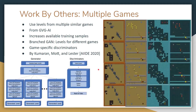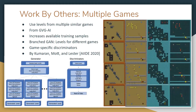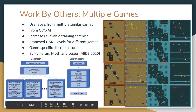Something else I heard about very recently while preparing this talk: work where someone took multiple games from the GVG-AI corpus and trained a branching GAN on all the data simultaneously. The generator had a common shared part but branched out at the end into different outputs for different games. Separate discriminators were used for each game. This is a way of augmenting your training set — you may have few examples for an individual game, but combining similar games gives more training data — and you end up with a single GAN that can produce levels for multiple distinct games.